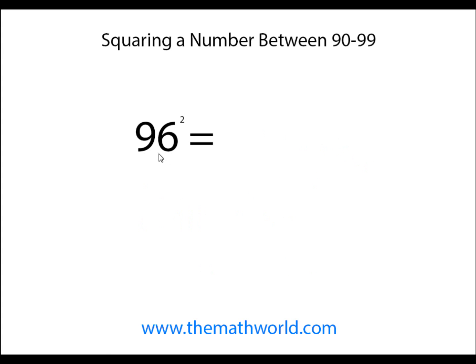The last example we're going to look at is 96 squared. We're going to take 100, subtract 96 from it. We're going to get 4. 4 squared, 4 times 4 is 16. We're going to write down 16.